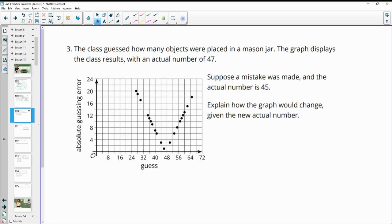Number 3, the class guessed how many objects were placed in a mason jar. The graph displays the class results with an actual number of 47. Suppose a mistake was made and the actual number is 45. How would this change the graph? So when you look at it, the actual number has an absolute error of 0.